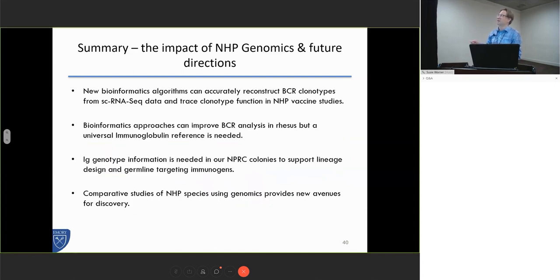Sorry for going a minute too over time, but just to make my take-home points: I think that there's a lot of nice new algorithms that can track BCR clonotypes from single-cell RNA-seq data even in non-human primates, and this is going to be important for understanding evolution of antibodies in these germline-targeting vaccines. We do need to build a universal reference for immunoglobulins to be able to do this efficiently. As we start to move monkeys in our NPRCs into germline-targeting and lineage-based vaccines, we need to understand the immunoglobulin genotypes, so genotyping is going to be an important aspect of our activities at NPRCs.